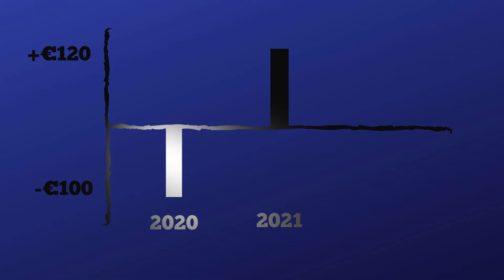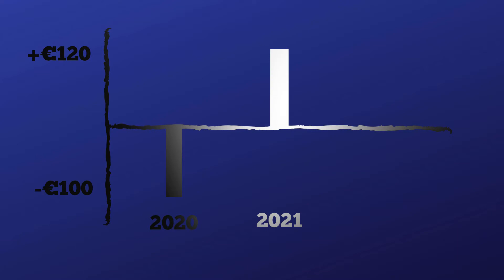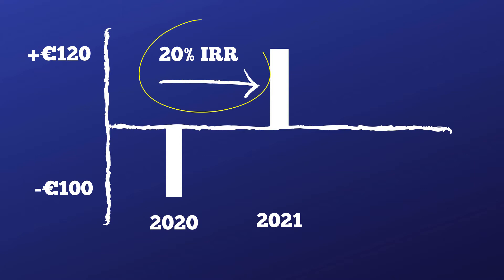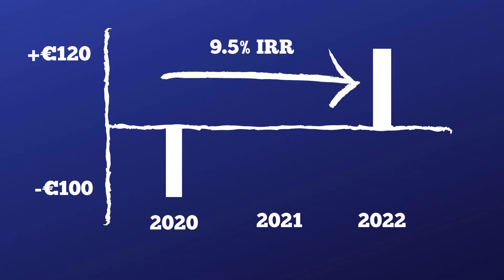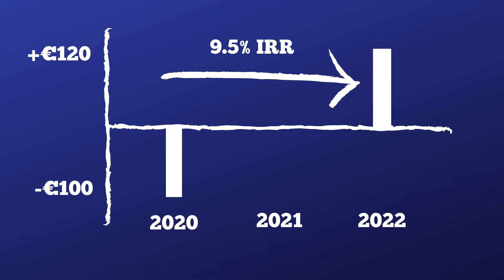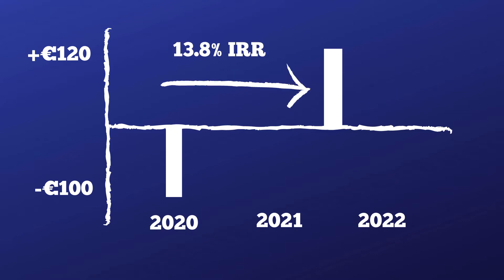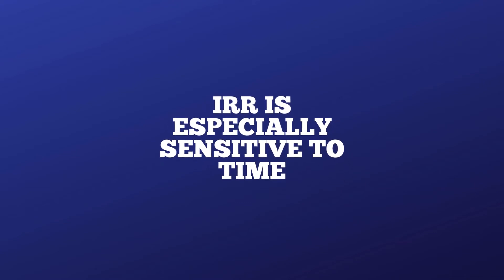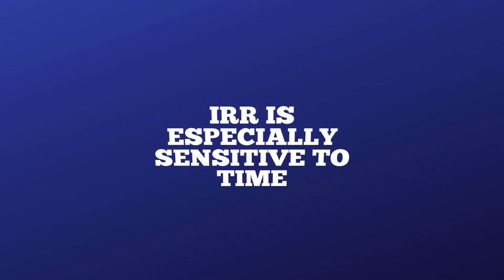If you invest €100 at the end of 2020 and get back your initial investment plus a profit of €20 at the end of 2021, you have earned exactly a 20% return. If instead you get your capital plus profit back at the end of 2022, you have earned a 9.5% annual return — the result of compounding. But if your cash flow timing is mid-year, say in May 2022, your return is 13.8%. The increased return from 9.5% to 13.8% is the result of the shorter timing of your investment — here is the time value of money at play.